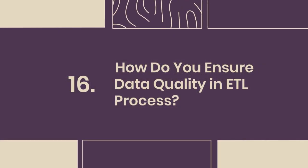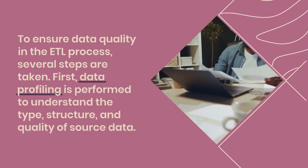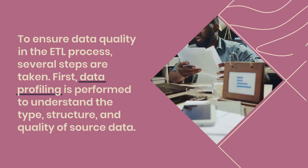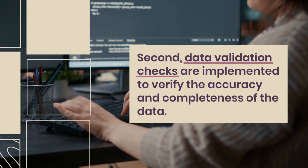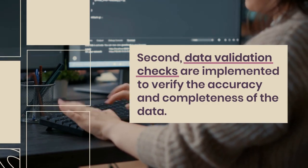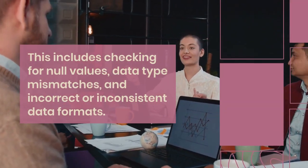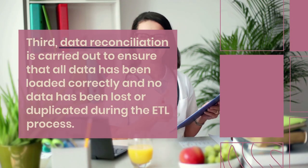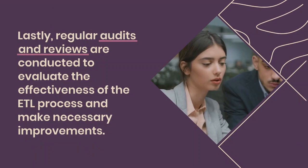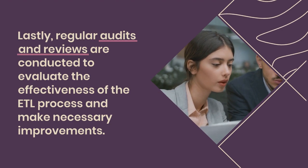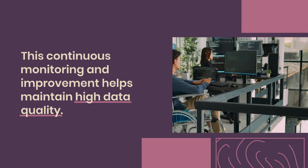Question 16: How do you ensure data quality in the ETL process? Several steps are taken: first, data profiling is performed to understand the type, structure, and quality of source data, identifying potential issues early. Second, data validation checks verify accuracy and completeness, including checking for null values, data type mismatches, and inconsistent data formats. Third, data reconciliation ensures all data has been loaded correctly with no data lost or duplicated. Finally, regular audits and reviews evaluate ETL process effectiveness and drive continuous improvement.